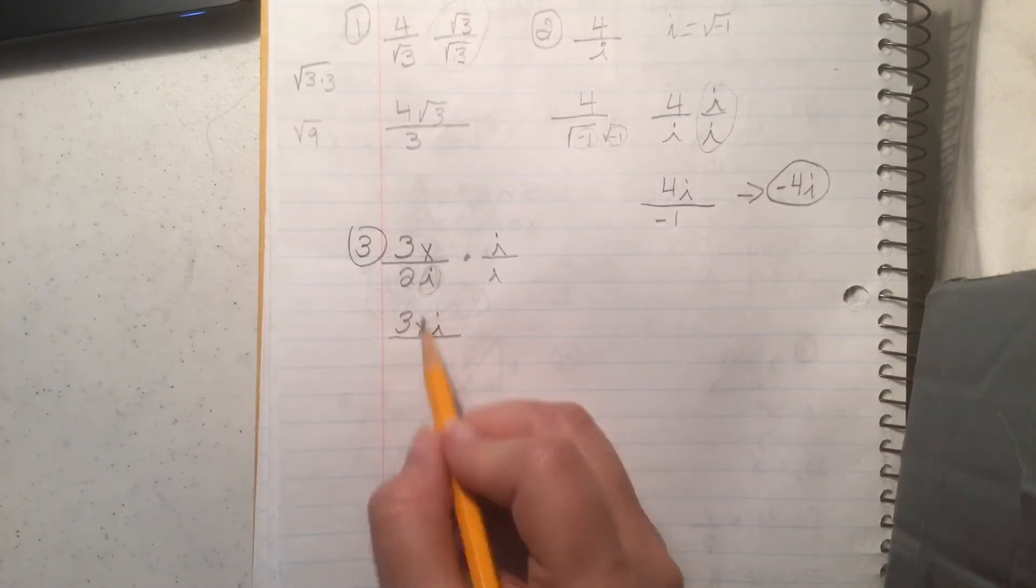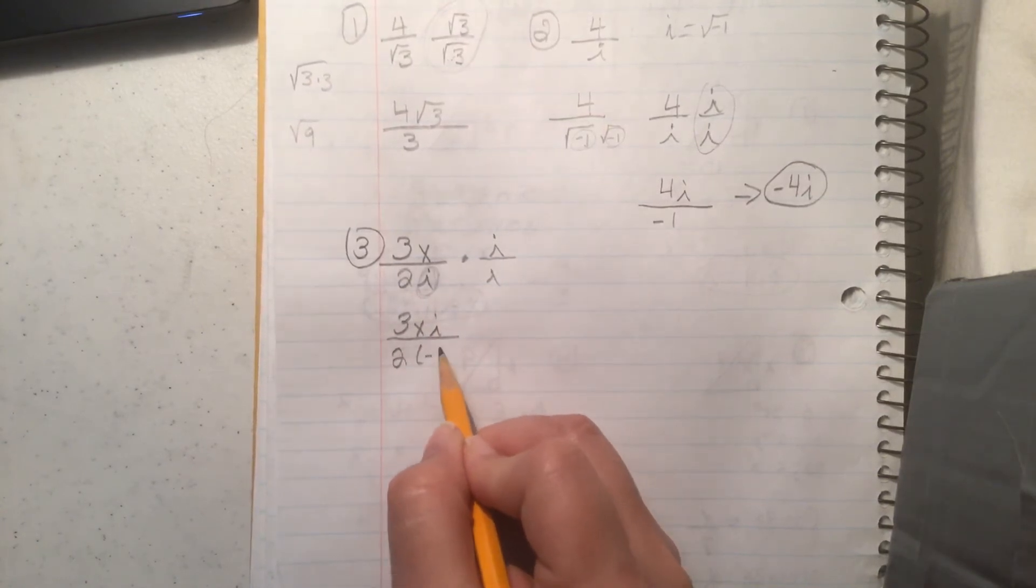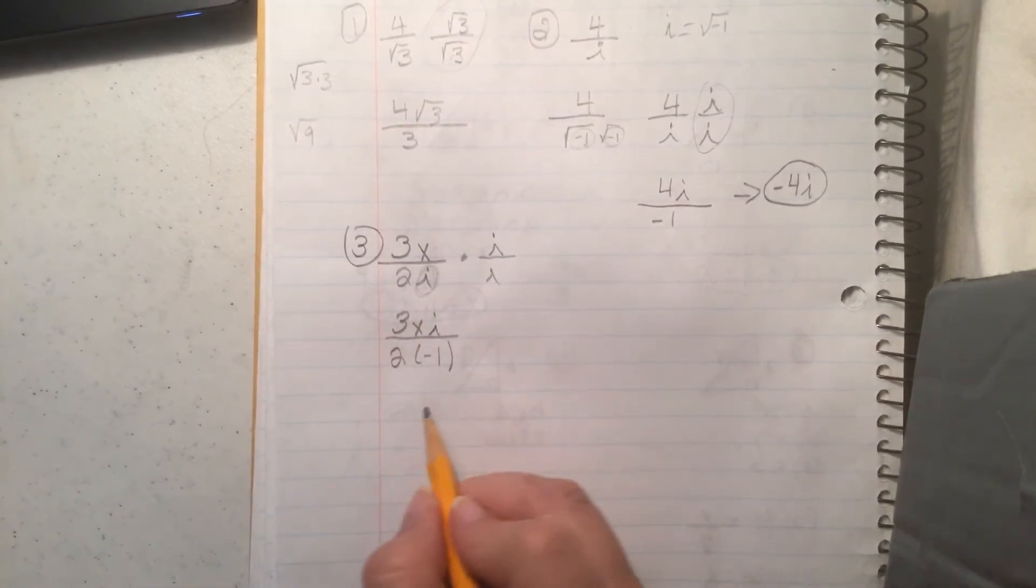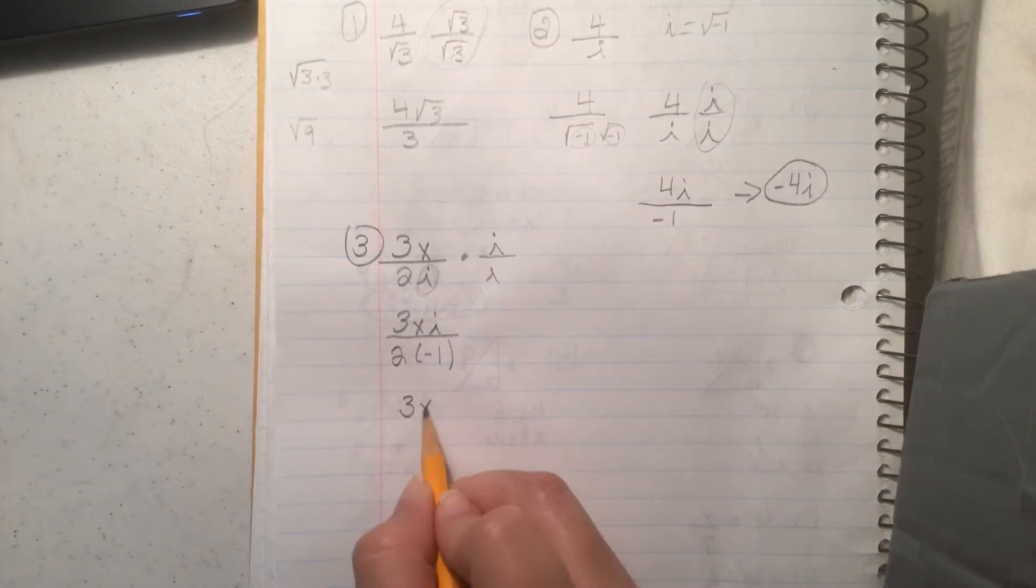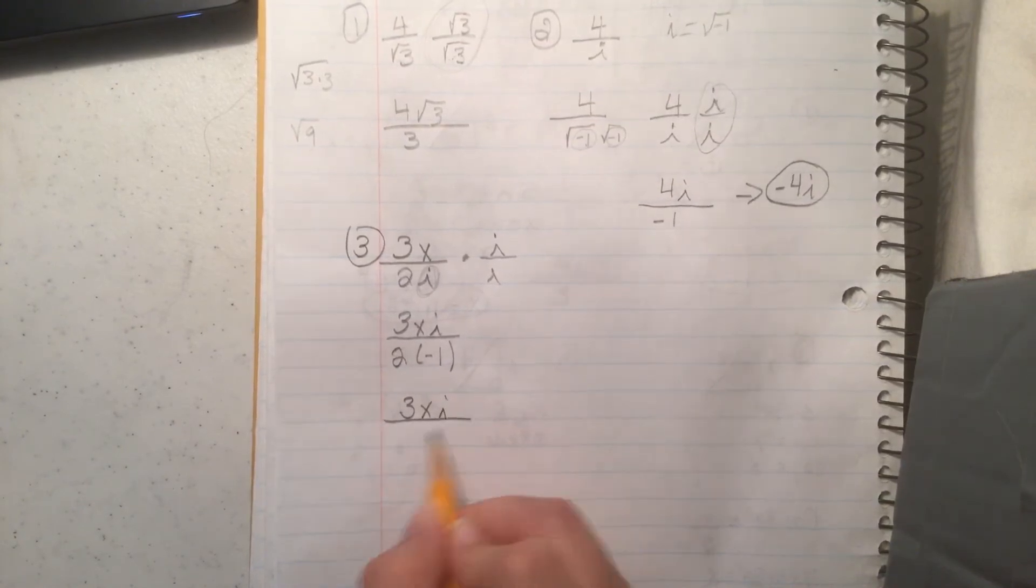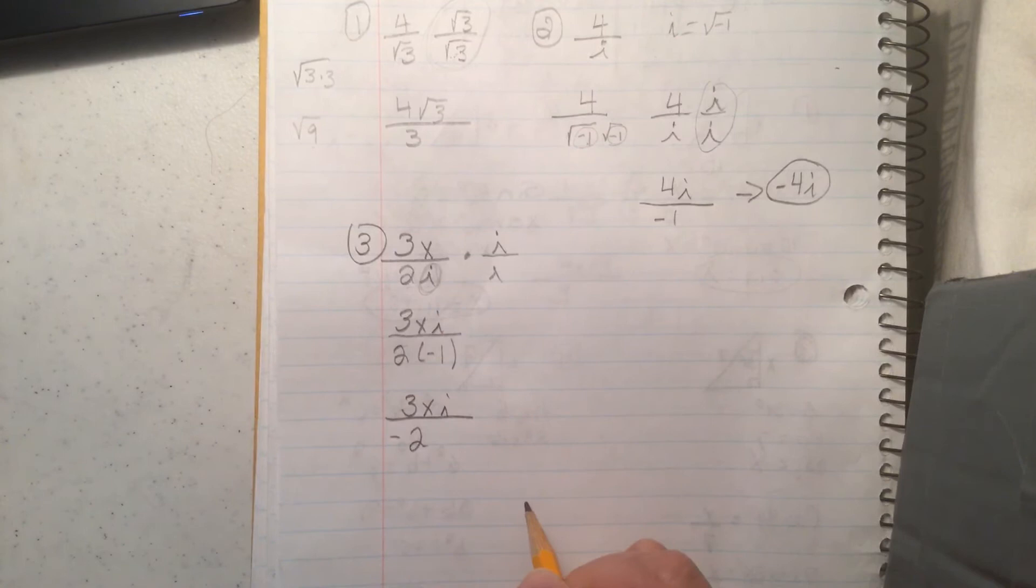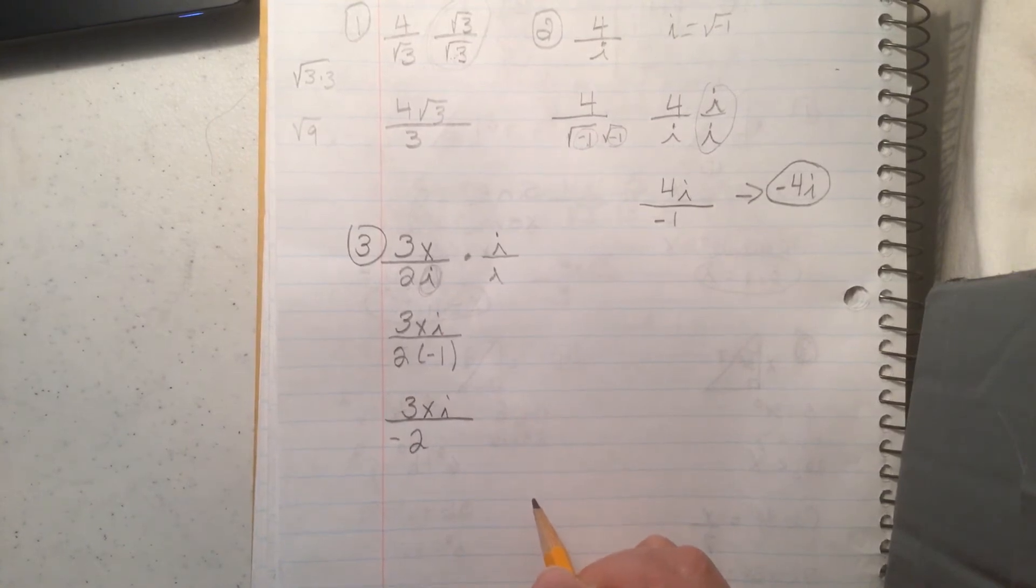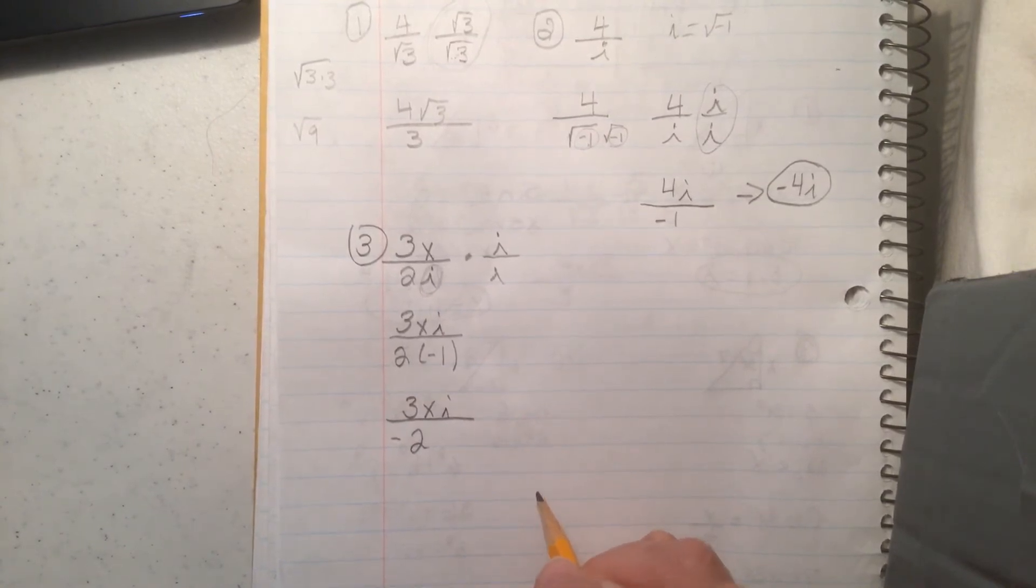And then this is 2 times negative 1 which is going to give you 3xi over negative 2. That's it. Far as you can go with that one.